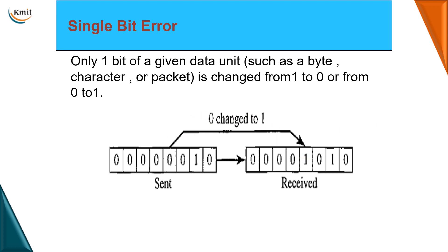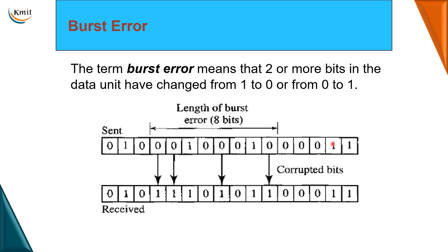In a burst error, two or more bits are changed from one to zero or from zero to one. For example, in a collection of eight bits, you can see that four bits are being altered or corrupted.